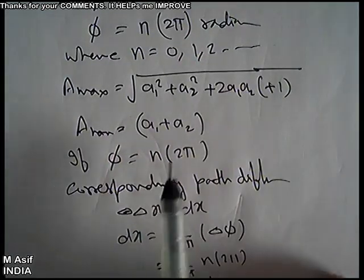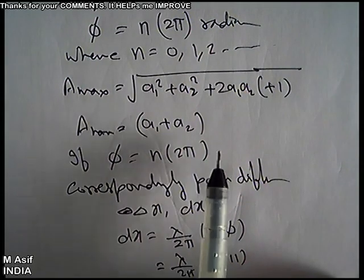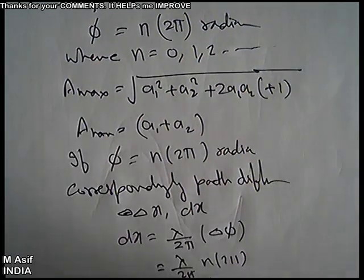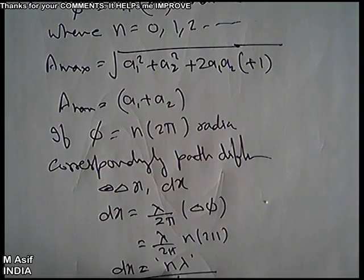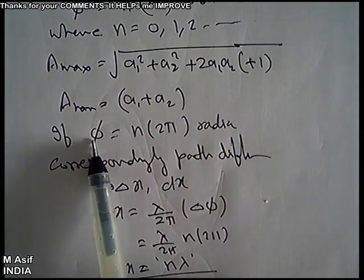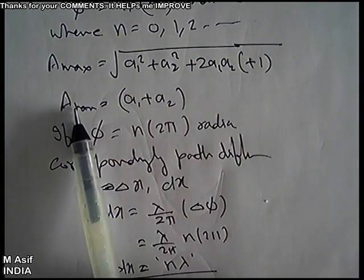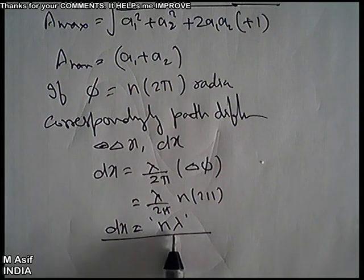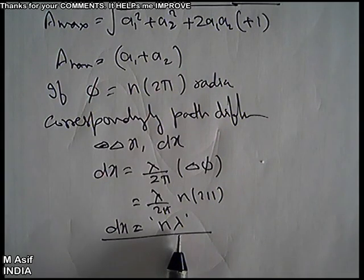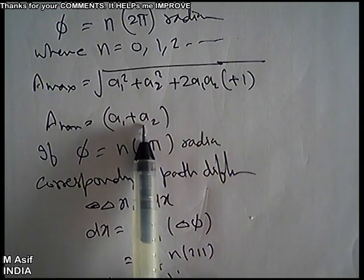Two equivalent conditions for maxima: (1) phase difference must be an integral multiple of 2π radians, and (2) path difference must be an integral multiple of wavelength λ. These two are not different — they are two forms of the same condition, synonyms of each other. At the maxima, the resultant amplitude is a1 + a2.